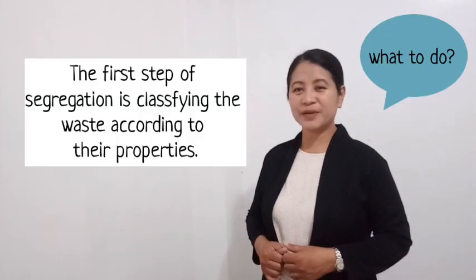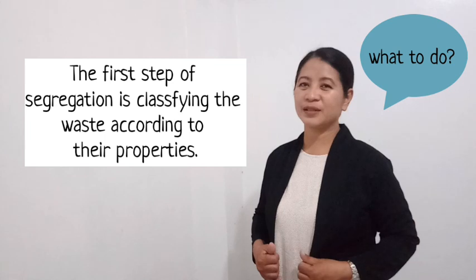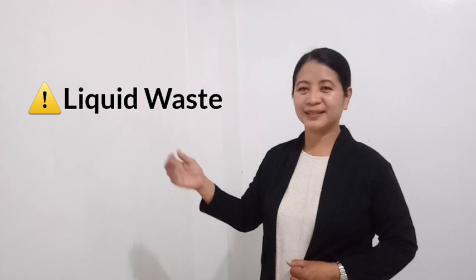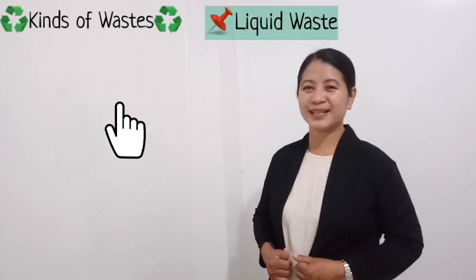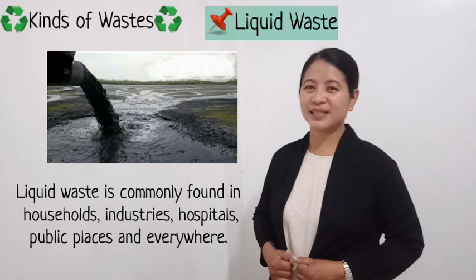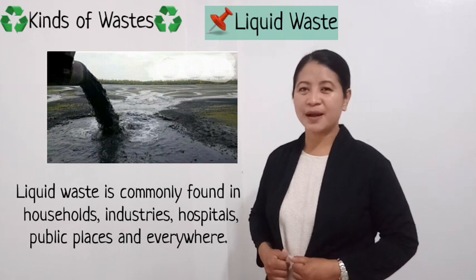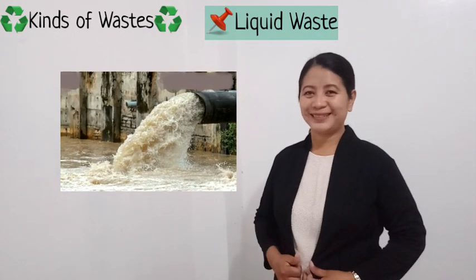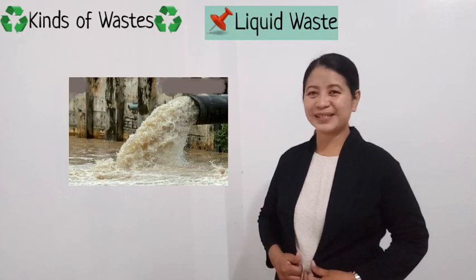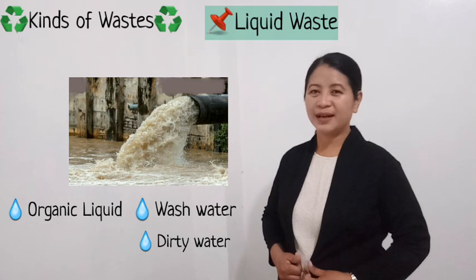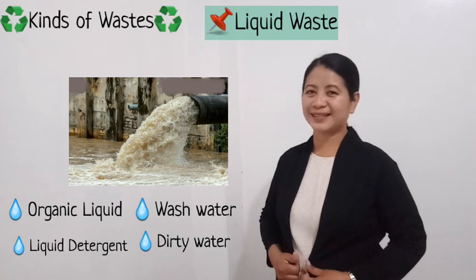The first step of segregation is classifying the waste according to their properties. Think about waste types. Liquid waste is commonly found in households, industries, hospitals, public places, and everywhere. It includes dirty water, organic liquid, wash water, and liquid detergents.